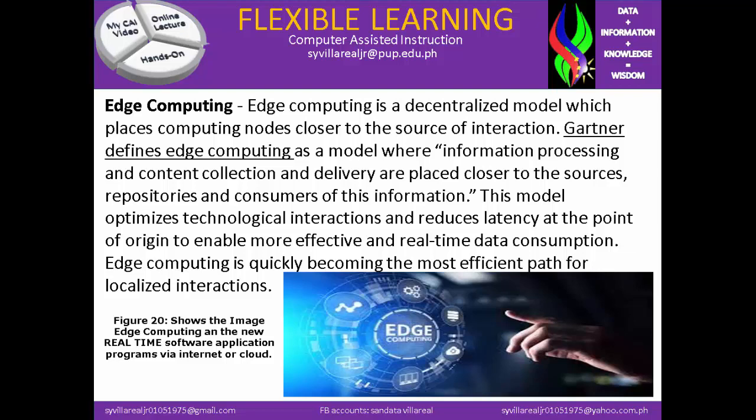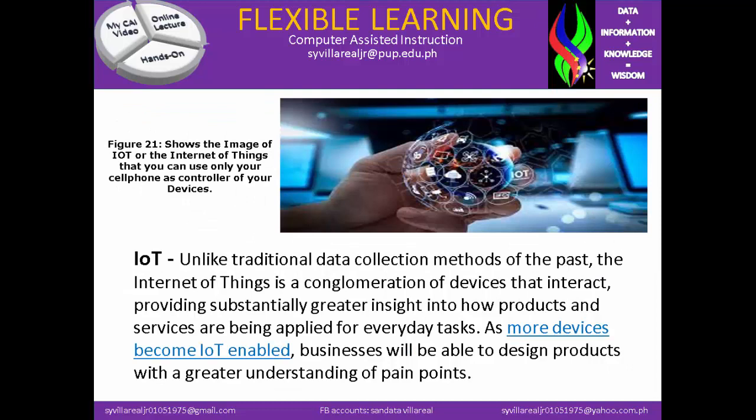Edge computing is quickly becoming the most efficient path for localized interaction. Next, we have IoT. Figure 21 shows the image of the Internet of Things — you can use only your cell phone as a controller of your devices and appliances. Unlike traditional data collection methods of the past, the Internet of Things is a conglomeration of devices that interact, providing substantially greater insight into how products and services are being applied for everyday tasks. As more devices become IoT-enabled, businesses will be able to design products with a greater understanding of pain points.